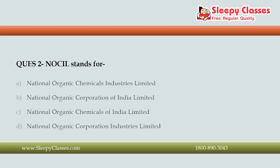The next question is: what does NOCIL stand for? The correct full form is National Organic Chemicals Industries Limited. It was set up in 1961 and was the first private industry in Mumbai related to naphtha products.